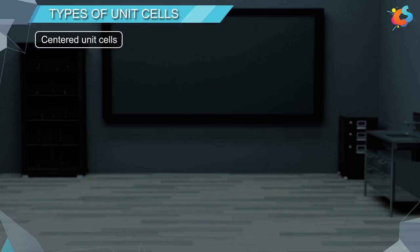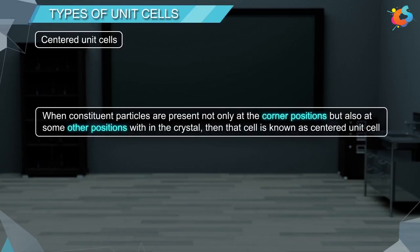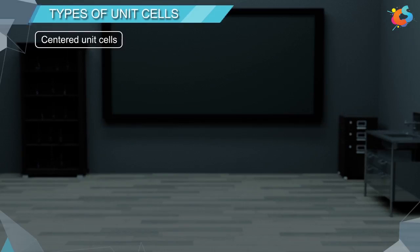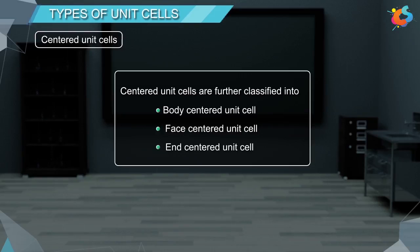Centered Unit Cells: When constituent particles are present not only at the corner positions, but also at some other positions within the crystal, then the cell is known as a Centered Unit Cell. Centered Unit Cells are further classified into Body Centered Unit Cell, Face Centered Unit Cell, and End Centered Unit Cell.